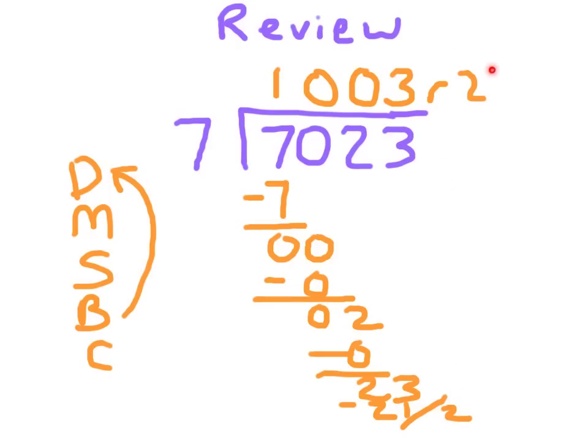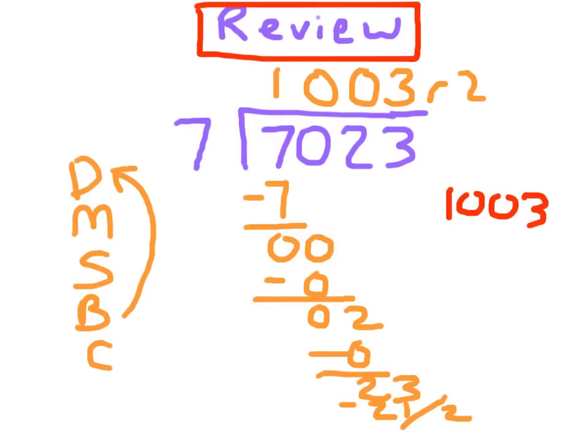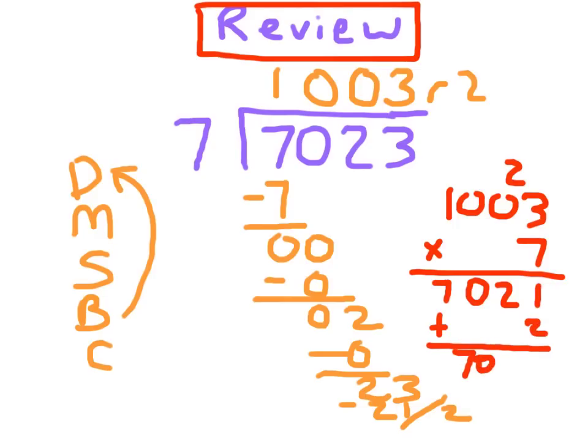Oftentimes, remember, students forget to write that remainder in. If you have a remainder of 0, please don't write it. You don't do that. How do I do my check, you might ask? Hopefully, you know, because this is review at this point. You shouldn't ask me. 1,003 what? Times 7. And then you go step by step there with that multiplication process. And what do you do with the remainder again? Add it back in. Now, if you did not get that same 7,023, 7,023, what would you need to do at that point?